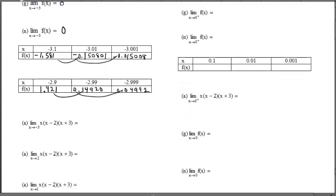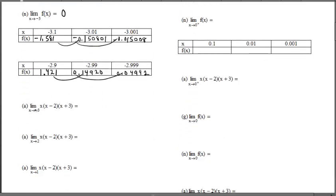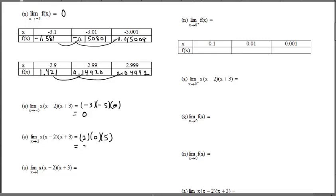Analytically means try direct substitution first — plug -3 in everywhere you see x. Negative 3 times (-3) in the first factor produces -5; negative 3 in the second factor gives us 0. That product is 0, supporting the previous two answers. Analytically, the limit as x approaches 2: plugging in 2 gives 2 - 2 = 0 in the second factor, so that product is also 0. We knew 2 was an x-intercept, so that answer is 0.